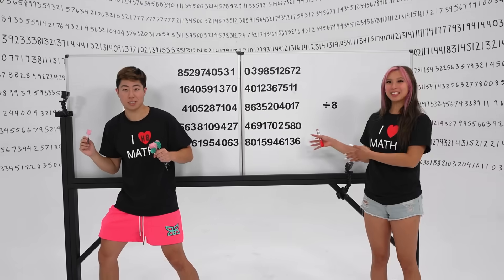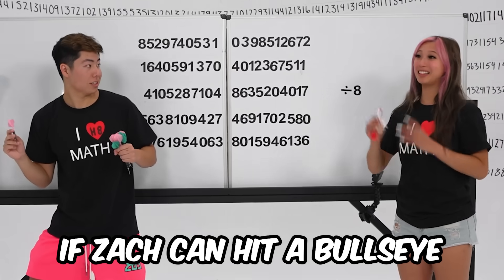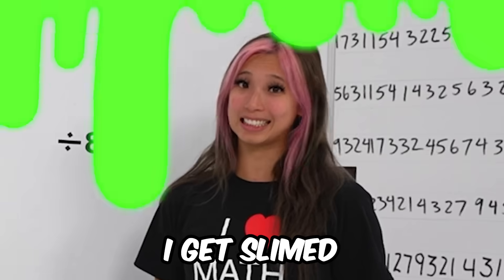That was fast. Now I'm going to solve a 100-digit math problem, and if Zach can hit a bullseye before I solve this, I get slimed. Okay, go.